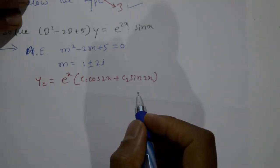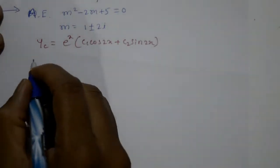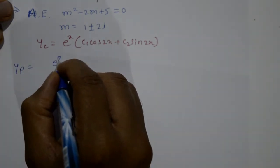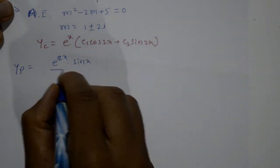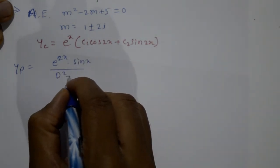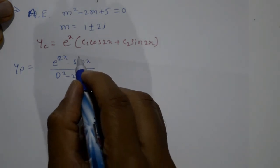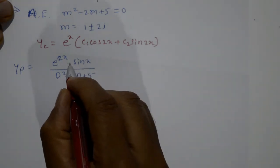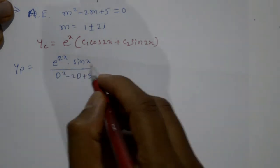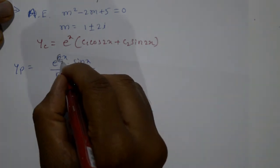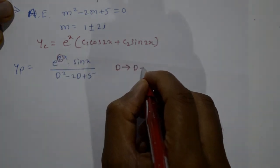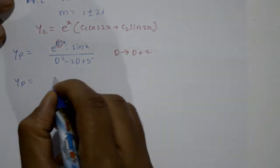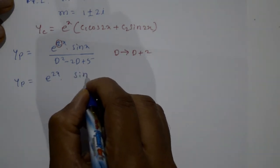The particular integral yp = e^(ax)·φ / f(D), where f(D) = D² - 2D + 5, φ = sin x, and a = 2. This is Type 4, so we shift D to D+a, meaning D becomes D+2.